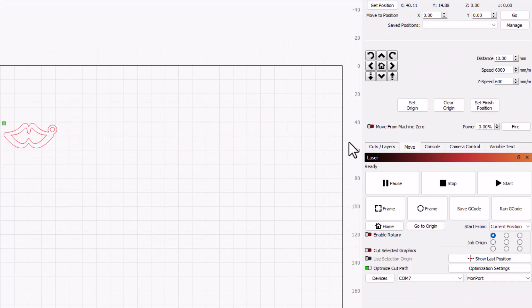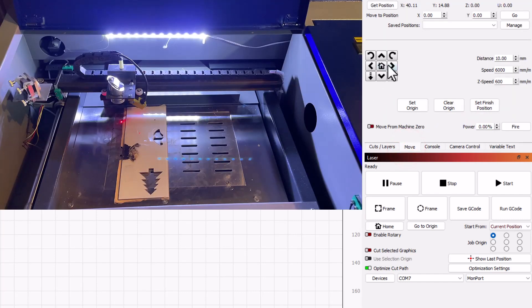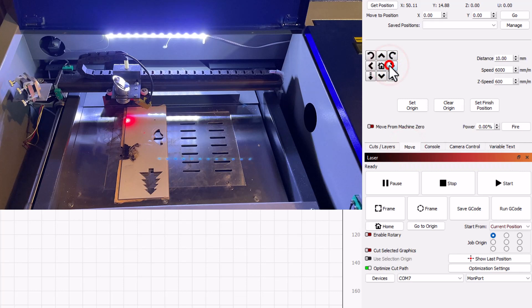I'm gonna use 350 and I'm gonna try and do this with two passes. Let's hit the move command and let's nudge the laser into position. I'm gonna tell it that I want to use current position.